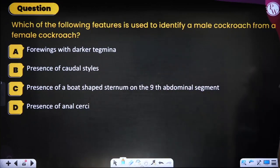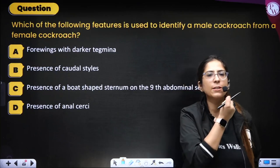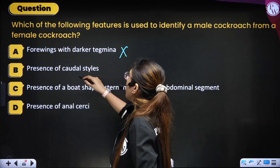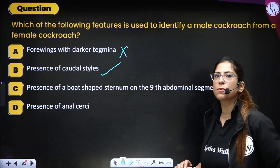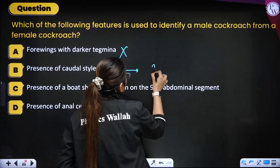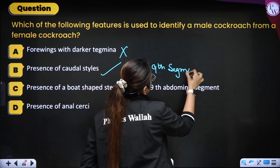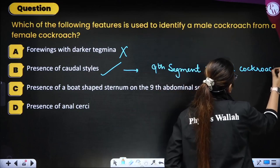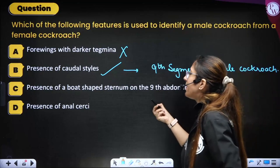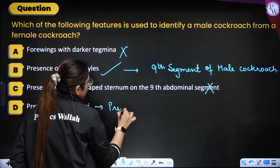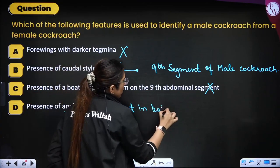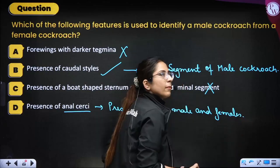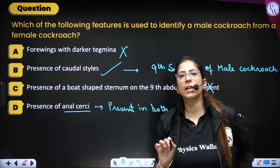Next question: which feature is used to identify a male cockroach from a female? Four wings with darker tegmina — No. Presence of caudal styles — Yes, styles are present on the ninth segment of the male cockroach only. Presence of board-shaped sternum — No. Presence of anal cerci — No, anal cerci are present in both males and females. Correct answer is presence of caudal styles.